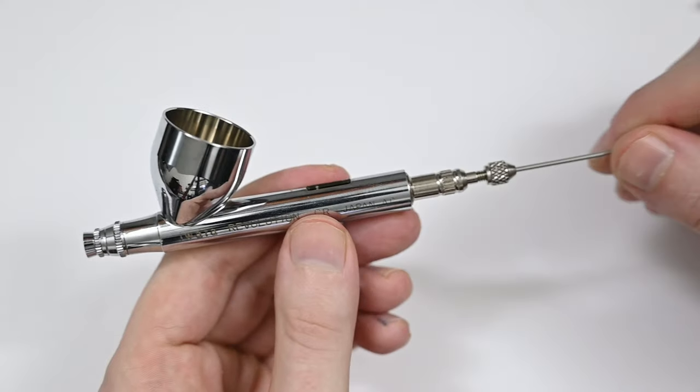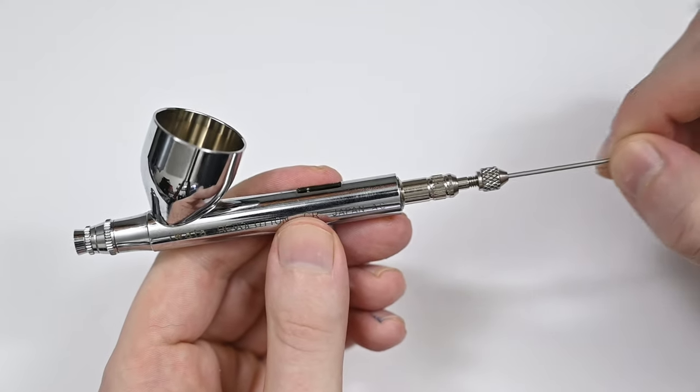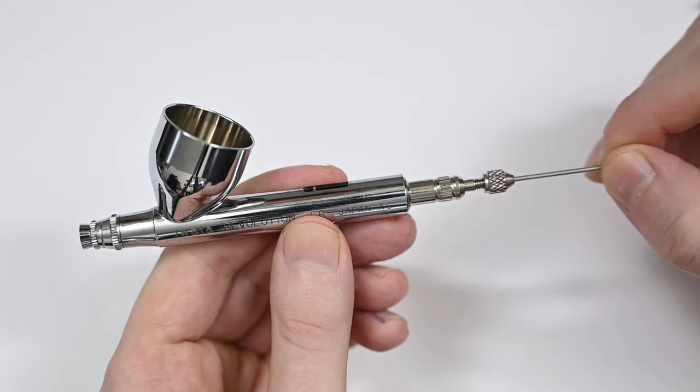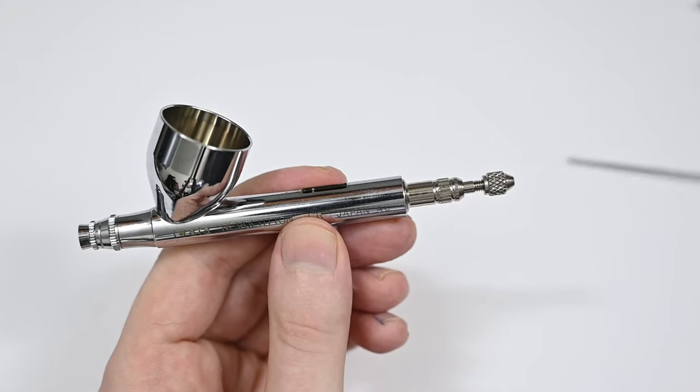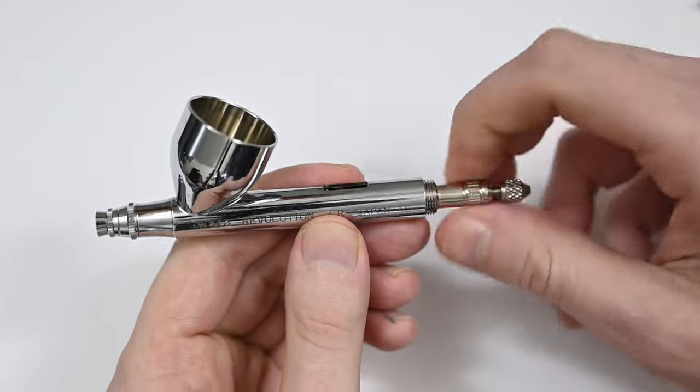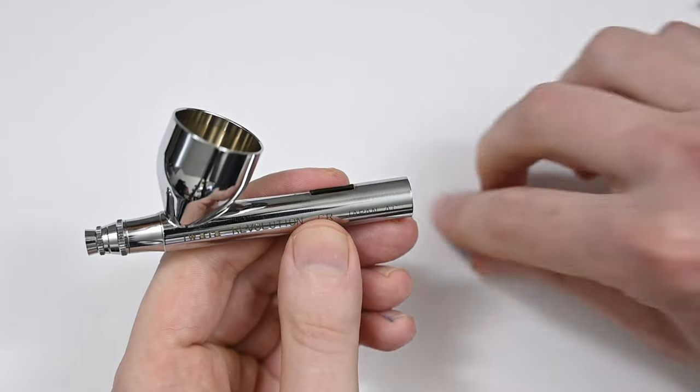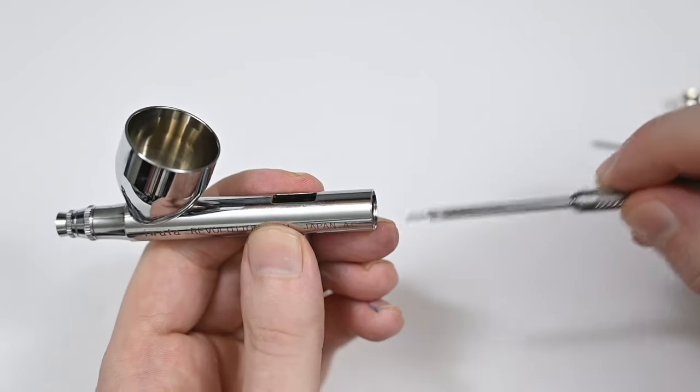So once the needle's in, about halfway through the airbrush, you'll feel a point where it slides through that needle packing screw. You'll just feel a bit of tension. And that's what you want. Just a very small amount of tension. If you feel that, it means it's making a seal and you're good to go.